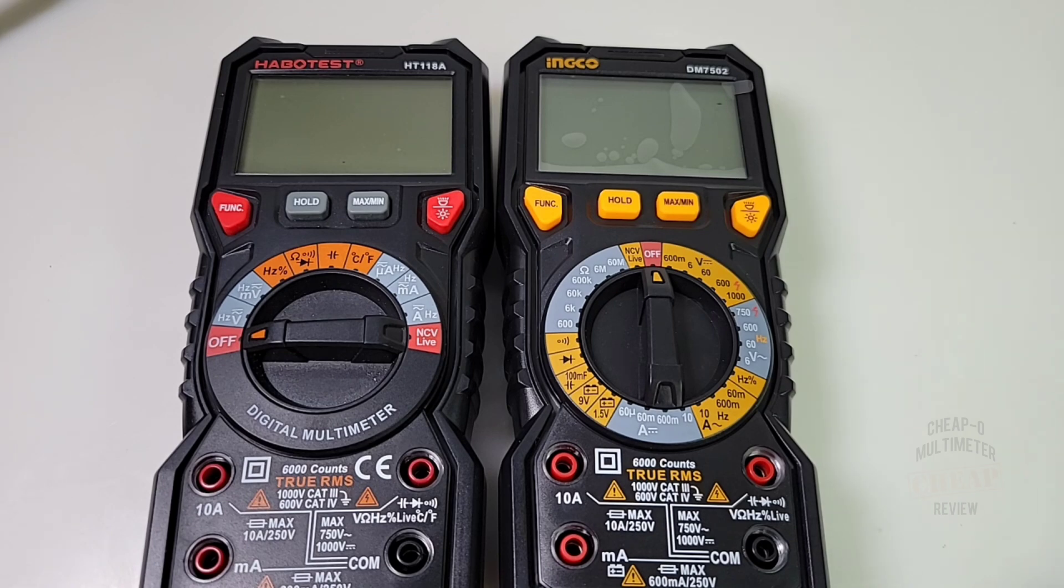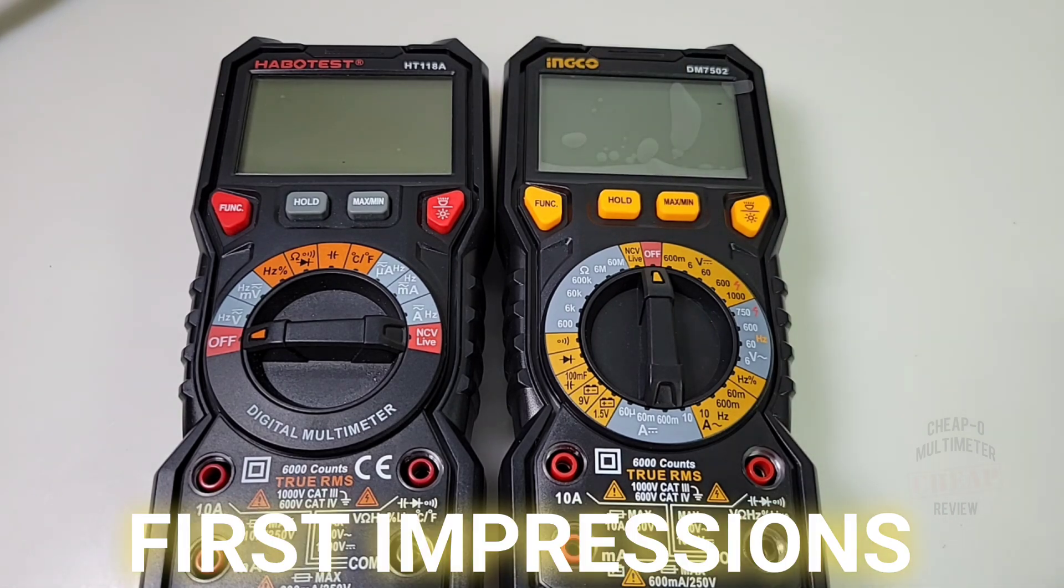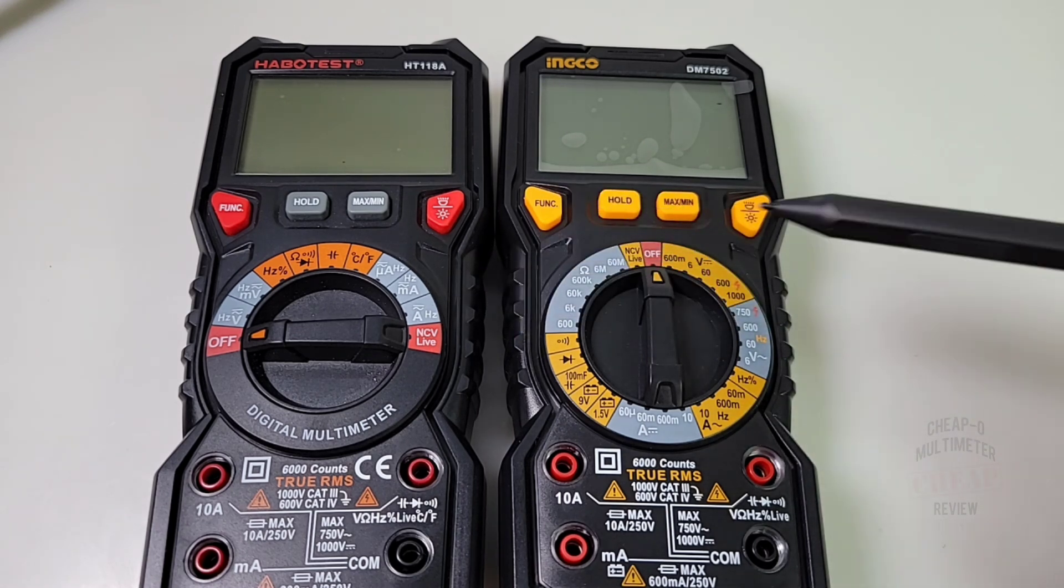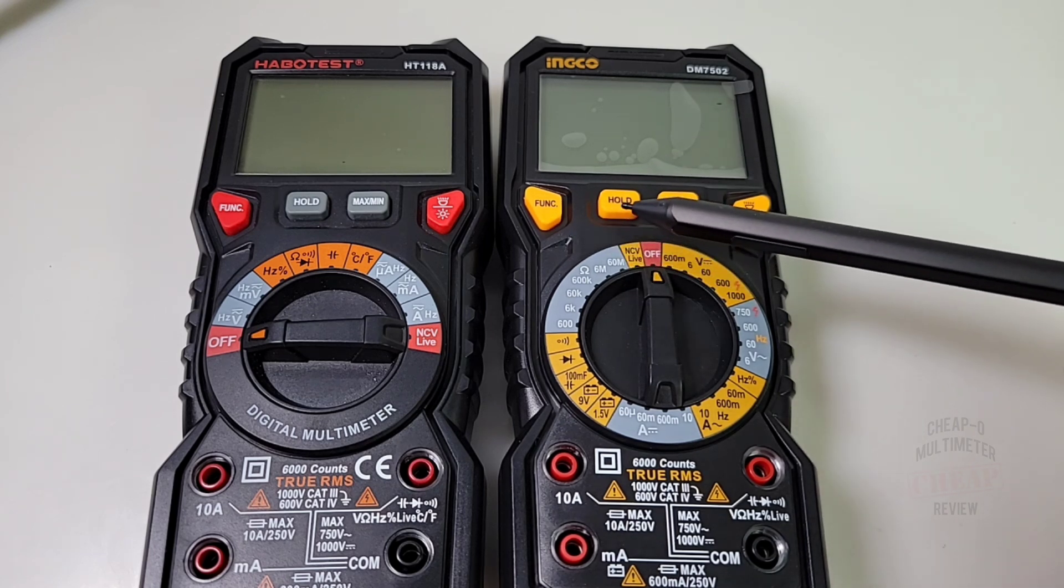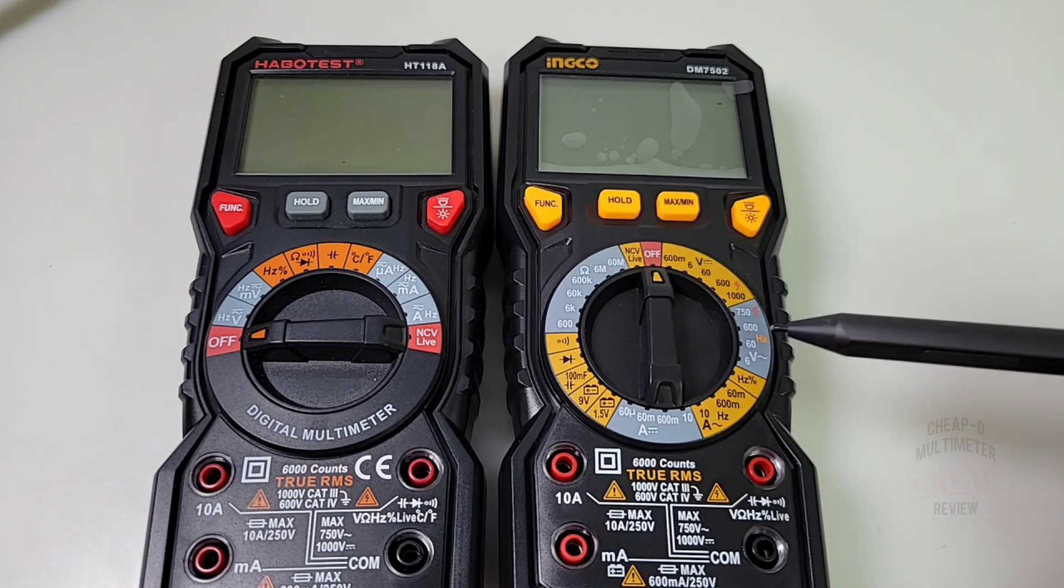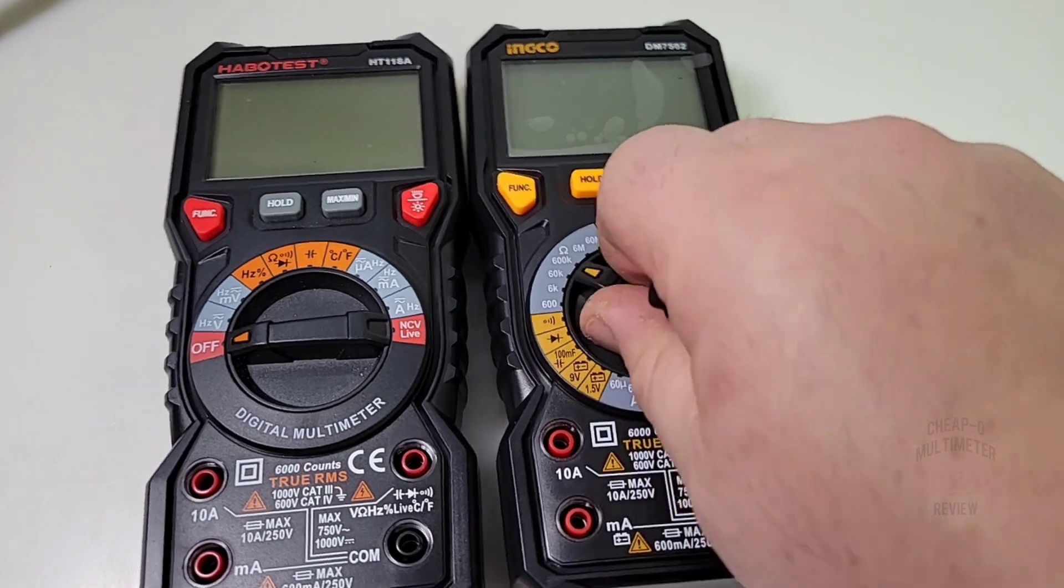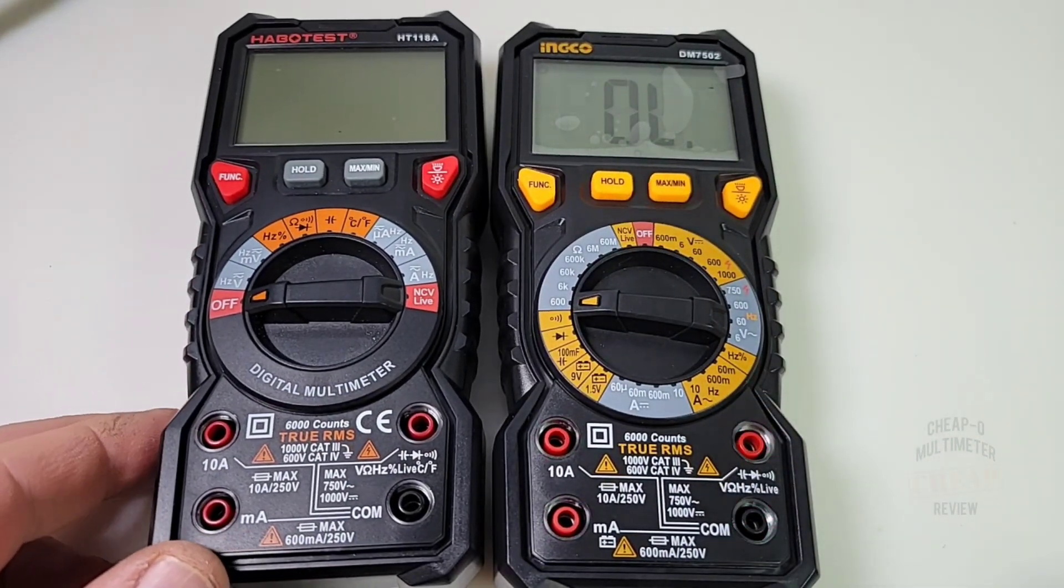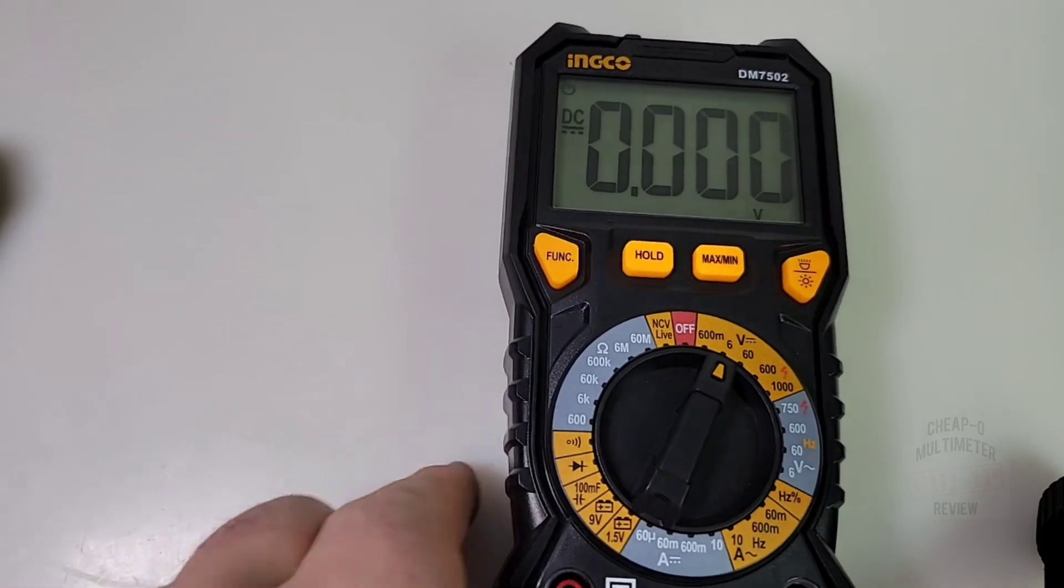Let's do a quick side-by-side to the Habotest HD 118A. Popular meter, number one in the cheapo zone. Yeah, it is identical body. Auto-ranging, manual, buttons themselves. Once again, max min, flashlight, function, hold all the same. Even the selector switch, if you take a close look, is basically the same selector switch. So this really is the same unit, but with slightly different programming. Let's just peel away that protective layer. Always appreciated when we see it on a multimeter.